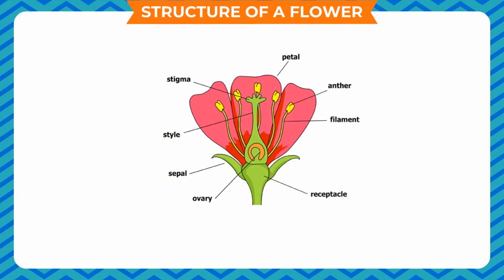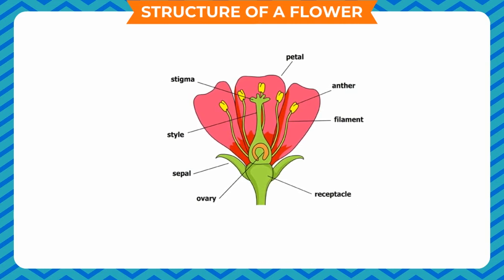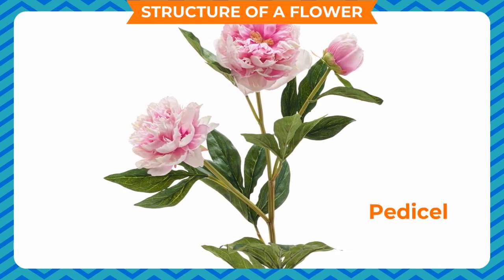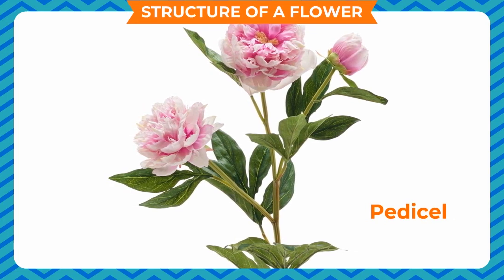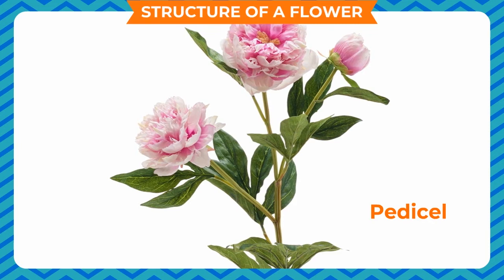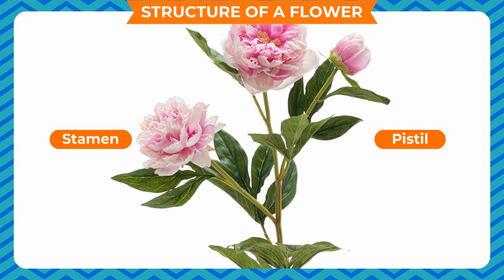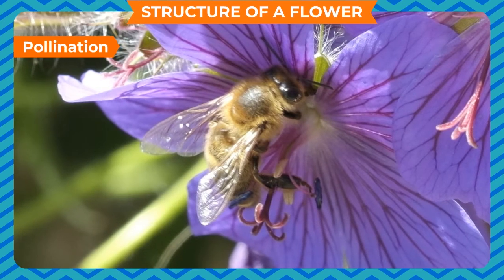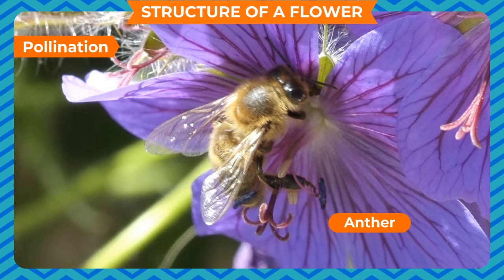Structure of a Flower: The flower is the reproductive part of a plant. The stalk of the flower is called the pedicel, which is slightly swollen on top and bears all the floral parts, namely sepal, petal, stamen, and pistil. Pollen grains are present in the pollen sac, which is called the anther.